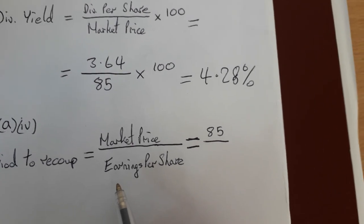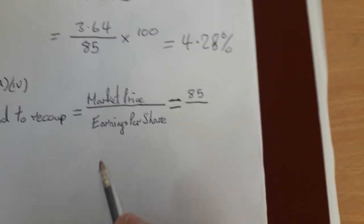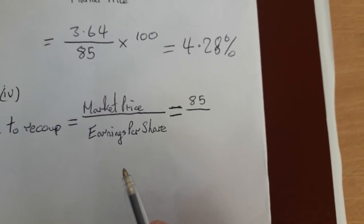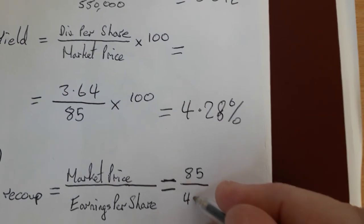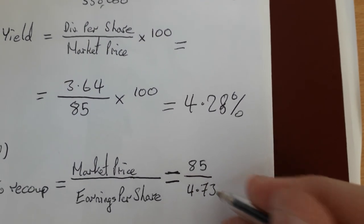Our earnings per share, we did that back in part 2 of this, and we worked out that the earnings per share was 4.73 cent per share.